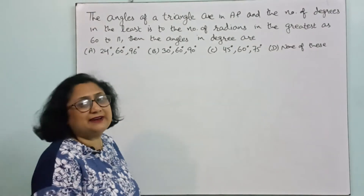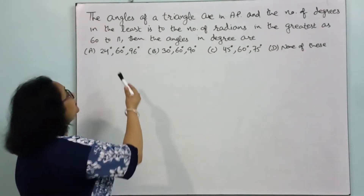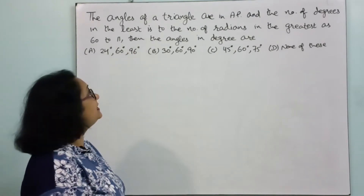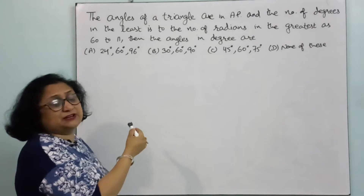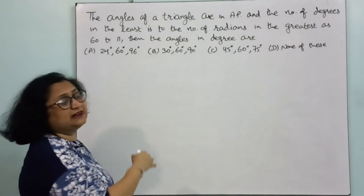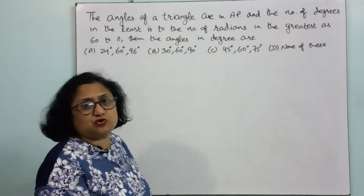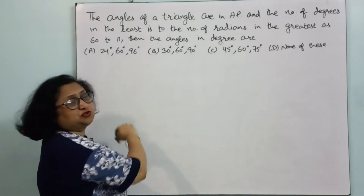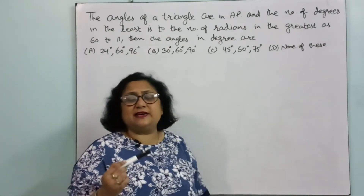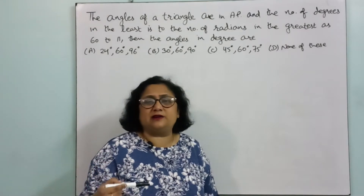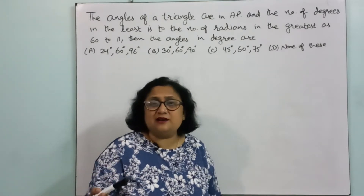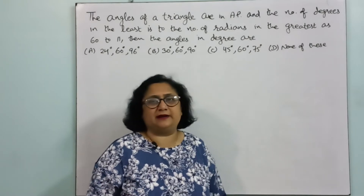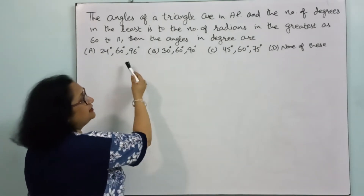The angles of a triangle are in AP and the number of degrees in the least is to the number of radians in the greatest as 60 to pi. The ratio is 60 to pi, which is smallest angle in degrees upon greatest angle in radians is equal to 60 upon pi. Then we have to find the angles in degrees.